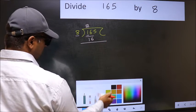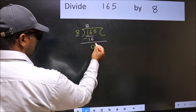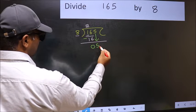Now you should subtract. 16 minus 16, 0. After this, bring down the beside number. So 5 down.